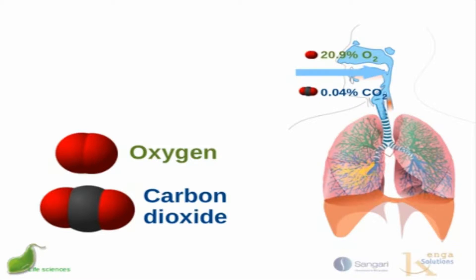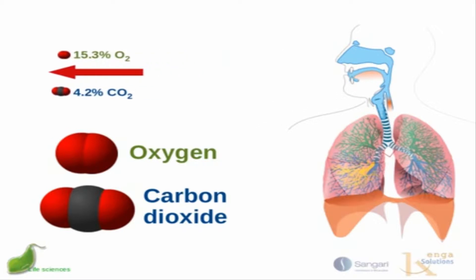When we breathe in normal air, it's about 21 percent oxygen and a tiny amount of carbon dioxide — about 0.04 percent. When we breathe out, that gas mixture contains about 15 percent oxygen and just over four percent carbon dioxide. So we breathe in air that is 21 percent oxygen and breathe out a mixture that is about 15 percent oxygen and about four percent carbon dioxide.